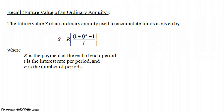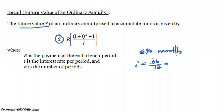Let's recall the formula for the future value of an ordinary annuity. The future value S is given by: S = R × [(1 + i)^N − 1] / i. Here S is the future value, R is the payment at the end of each period, i is the interest rate per period (e.g., 6% compounded monthly means i = 0.06 / 12 = 0.005), and N is the number of payment periods.